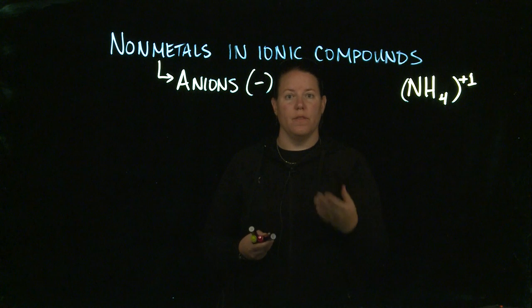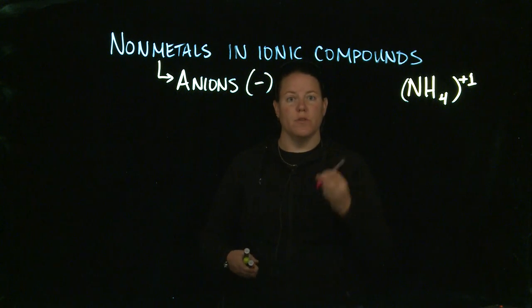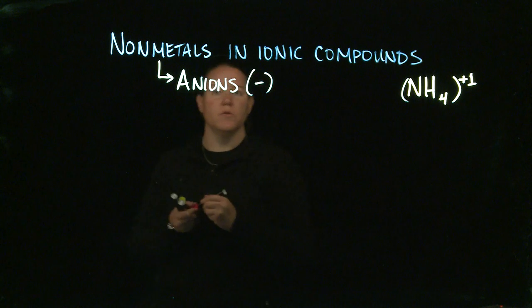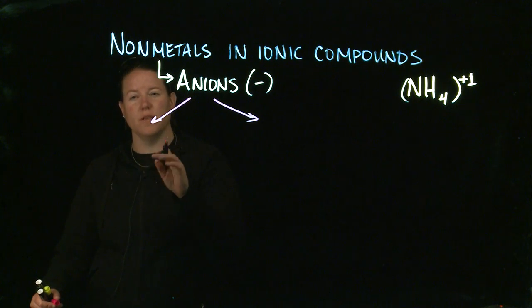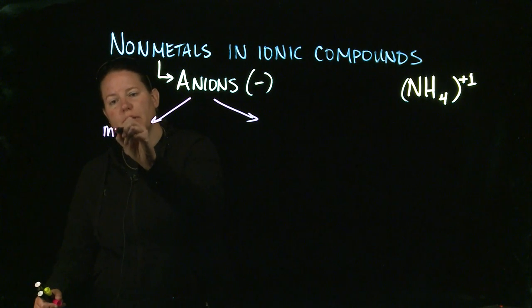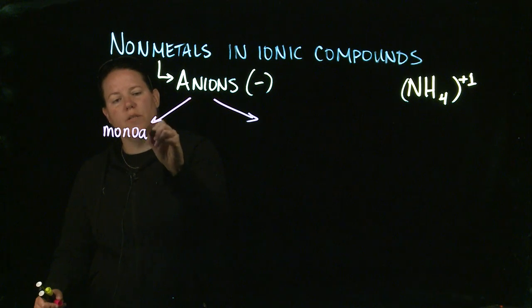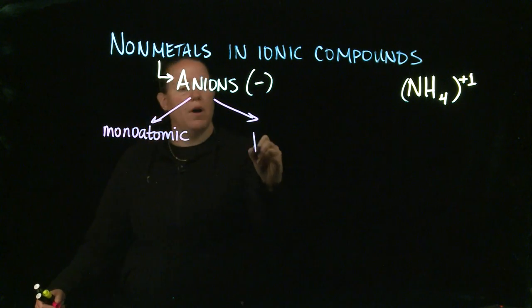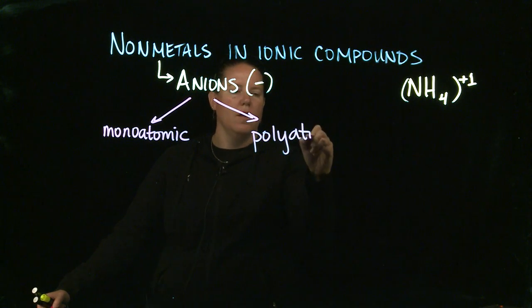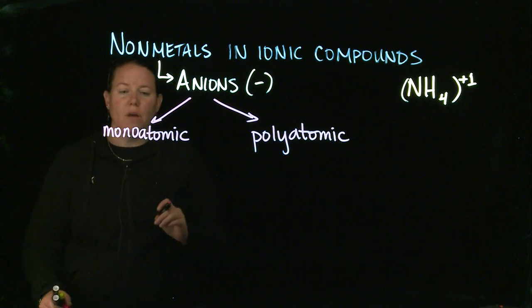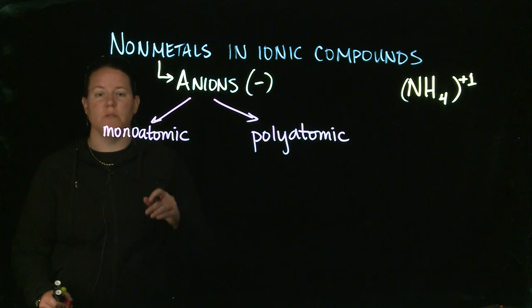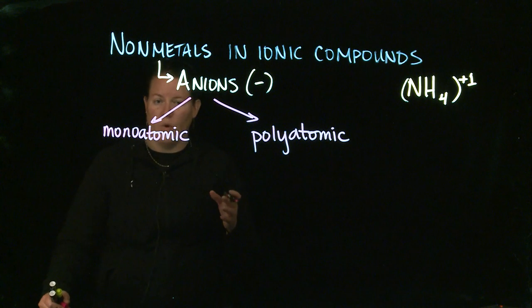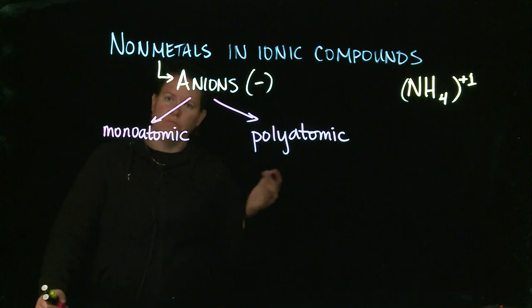We talked about the fact that there are two different kinds of metals. There are also two different kinds of nonmetals. What do those look like? Basically, major categories: we talk about them as monoatomic or polyatomic. I think these names are a little bit of a misnomer. If you literally translated these names, mono in Greek means one, so you're talking about one atom versus poly, many atoms.